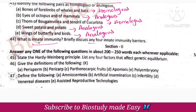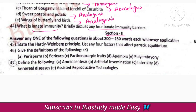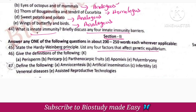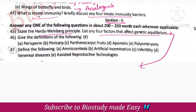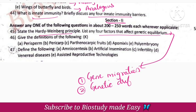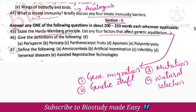What is innate immunity? Four innate immunity barriers — this is a 5-mark question. State Hardy-Weinberg principle and four factors affecting genetic equilibrium: gene migration, genetic drift, mutation, natural selection, and genetic recombination — these are the definitions.